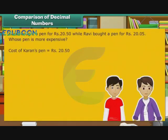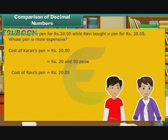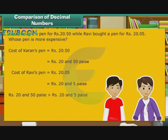The cost of Karan's pen is Rs. 20.50 and the cost of Ravi's pen is Rs. 20.05. Comparing the two, Rs. 20.50 is greater than Rs. 20.05. Therefore, Karan's pen is more expensive.